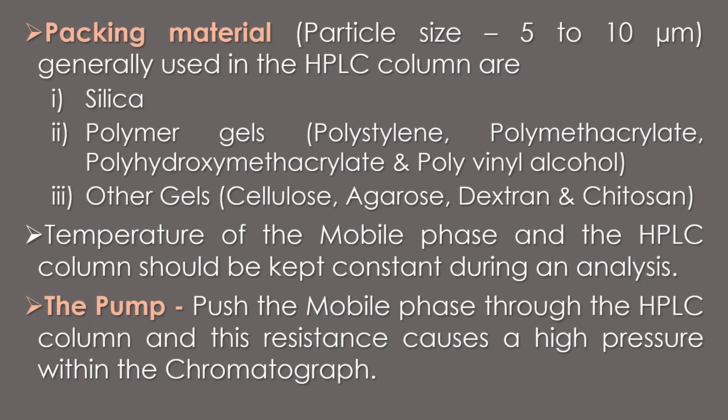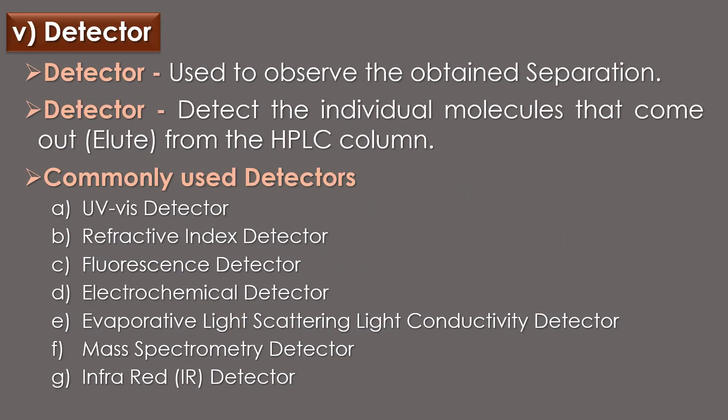The packing material with a particle size of 5 to 10 micrometers generally used in the column includes silica, polymer gels like polystyrene, polymethacrylate, polyhydroxy methacrylate, and polyvinyl alcohol, and other gels including cellulose, agarose, dextran, and chitosan. Ideally, the temperature of the mobile phase and the HPLC column should be kept constant during an analysis. The pump drives the mobile phase through the HPLC column, and this resistance causes high pressure within the chromatograph.